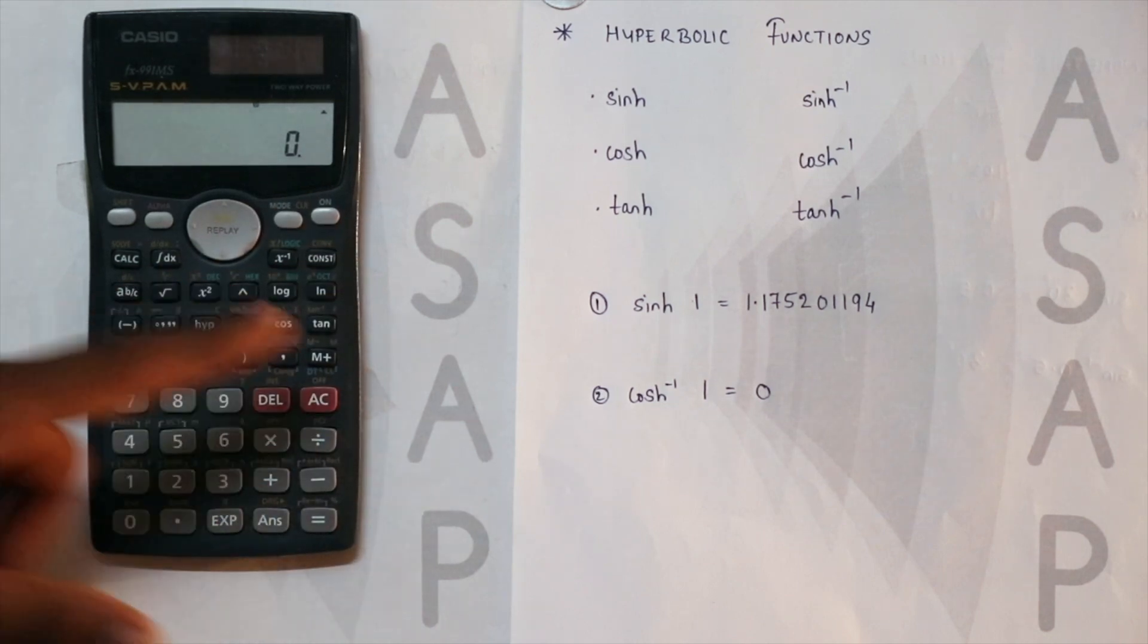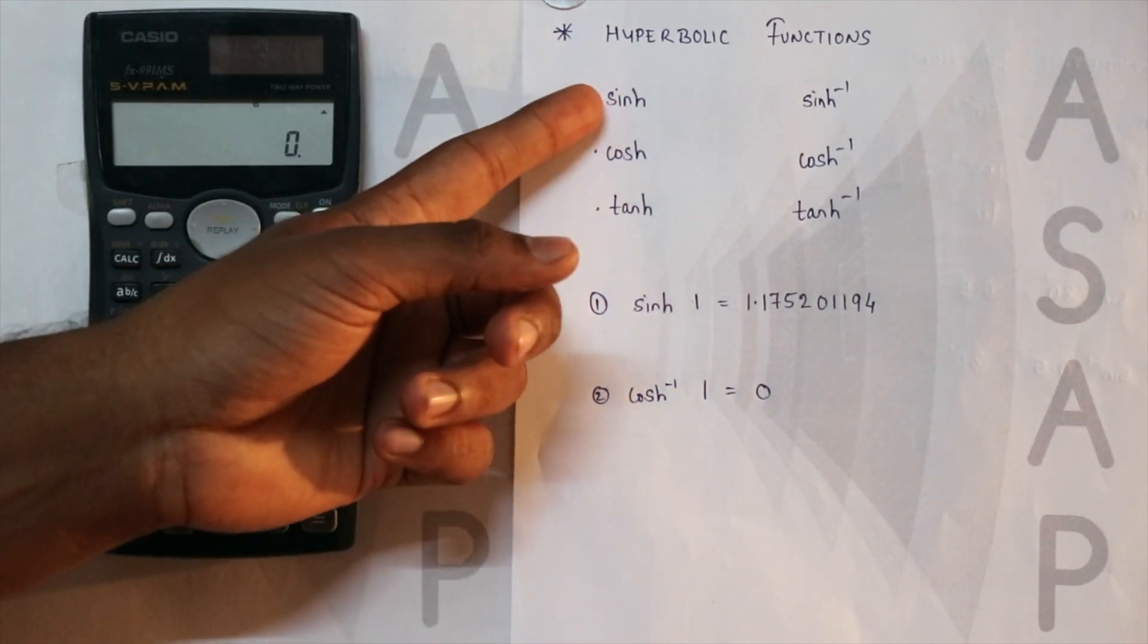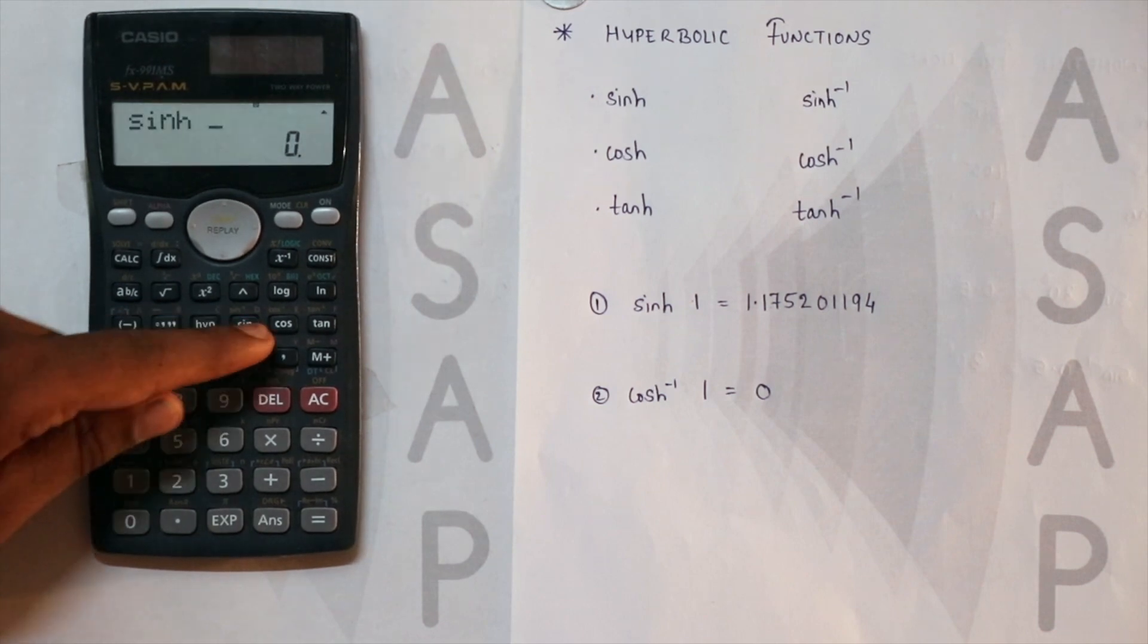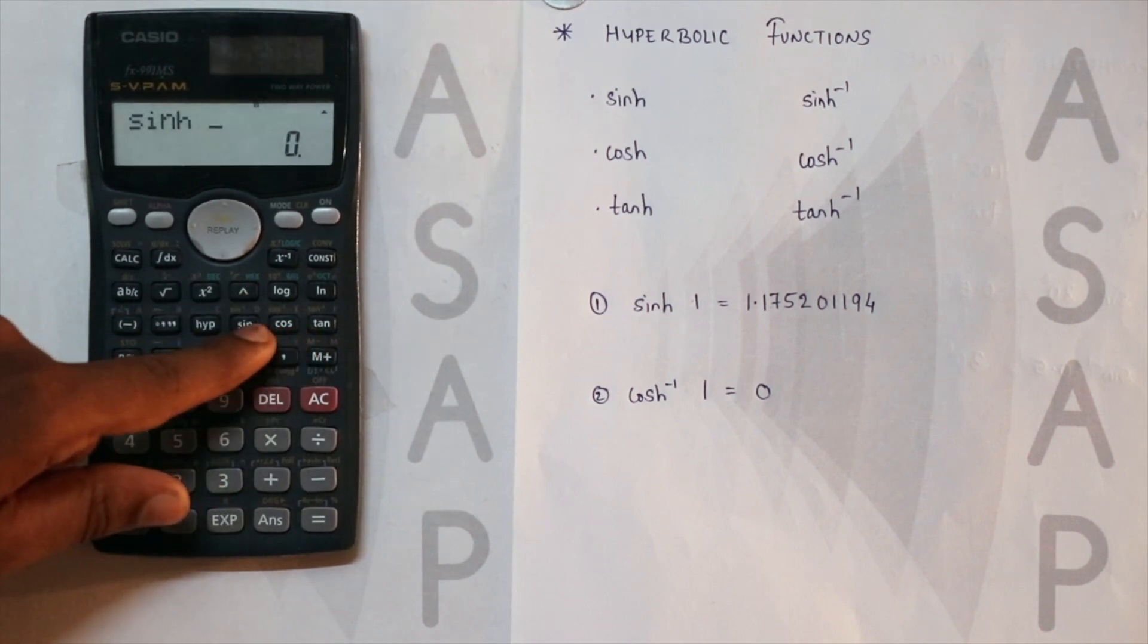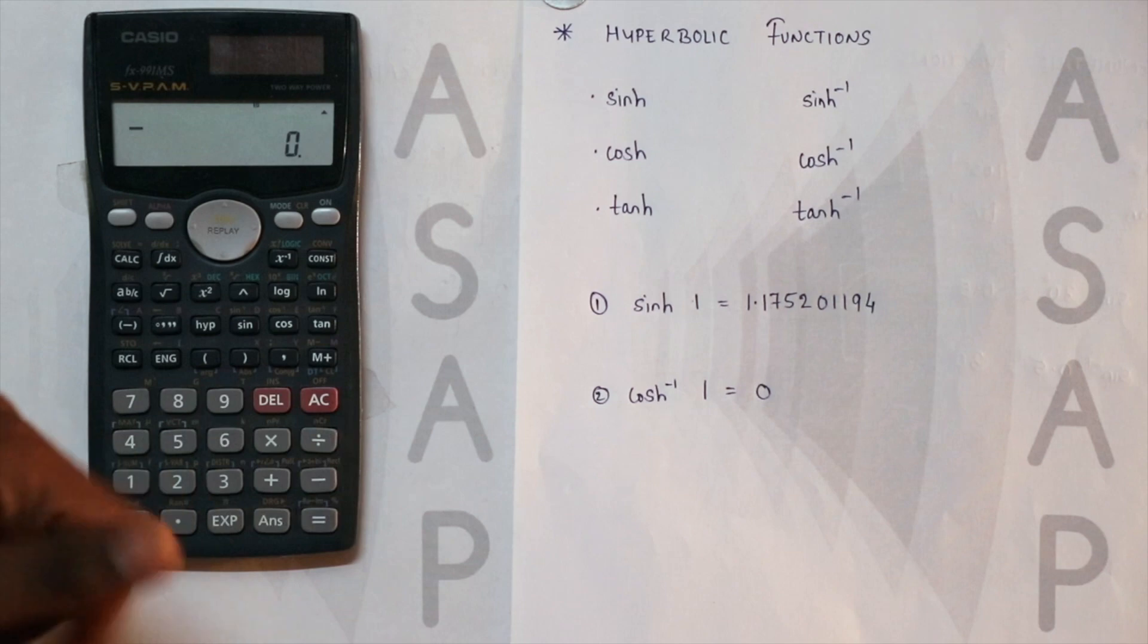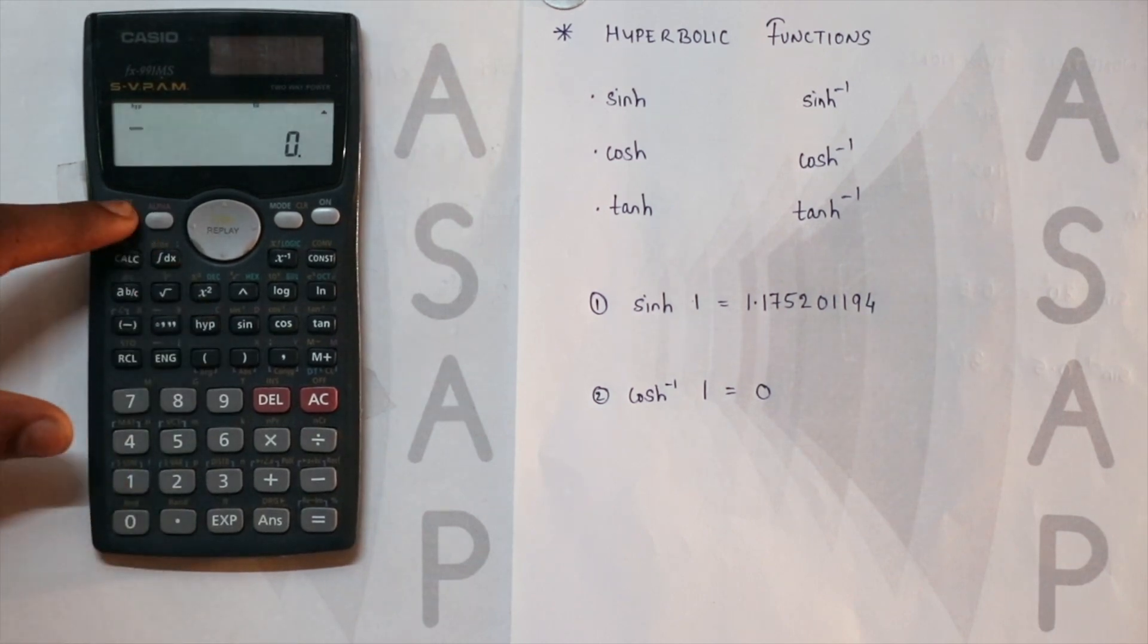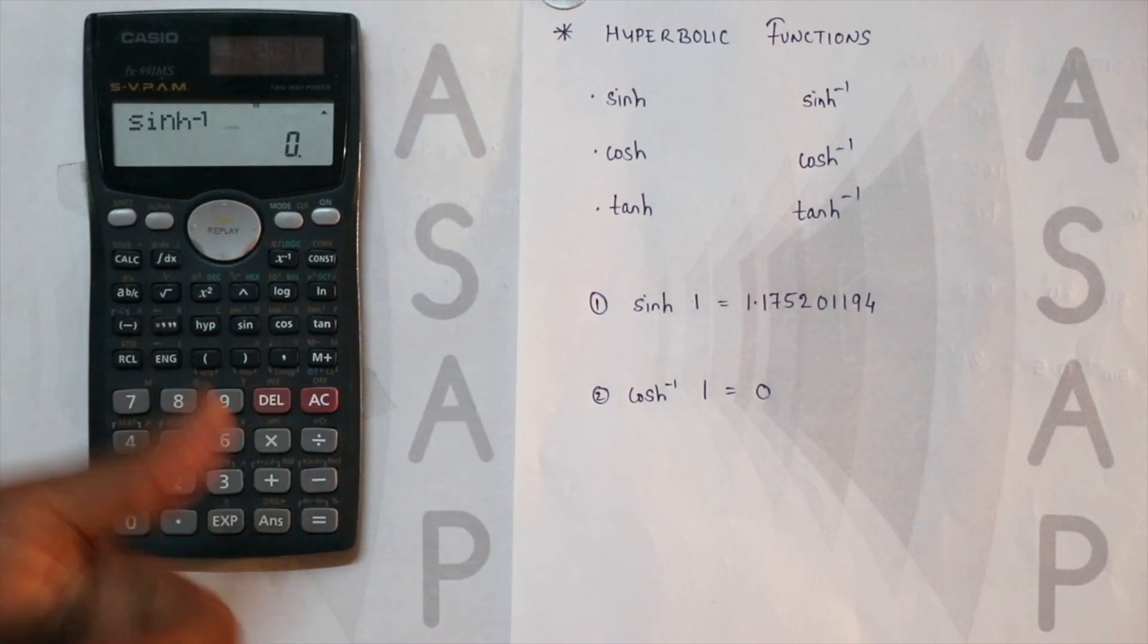Just a quick recap: if you want to find the hyperbolic of sine, cos, tan, you simply press this hyp button, that is hyperbolic, and then whichever value you want - that is sine, cos, or tan. And if you want to find the inverse, then hyperbolic button and then shift and sine, cos, or tan.